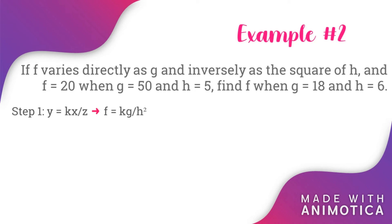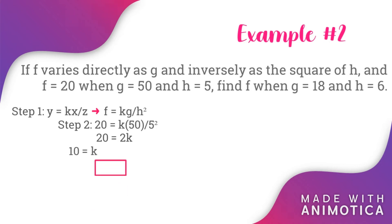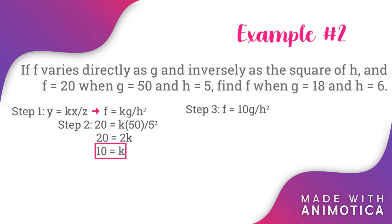Step number two: substitute all the information given to the problem to have a new equation. Now we have 20 is equal to k multiplied by 50 all over 5 squared. We are going to simplify the equation to get the constant of proportionality. The answer is k is equal to 10. Step number three: rewrite the equation from step one by substituting the value of k. We now have f is equal to 10g all over h squared.